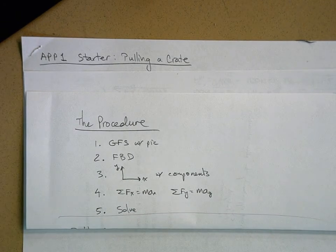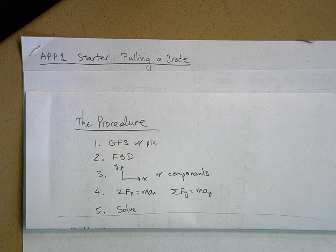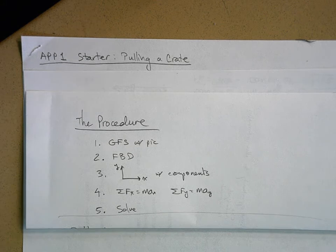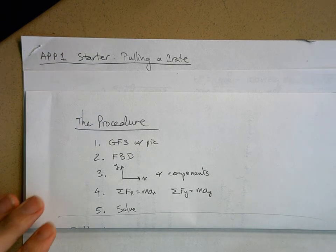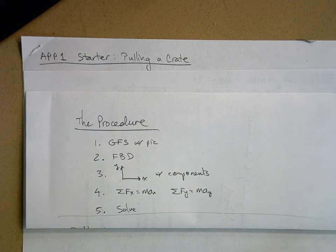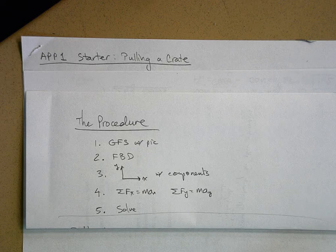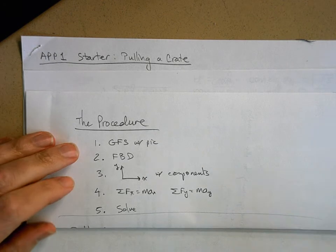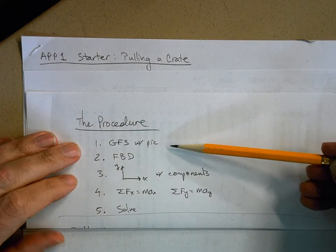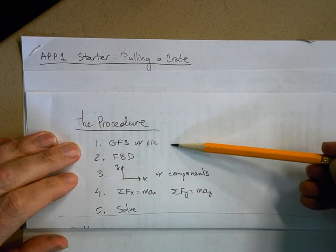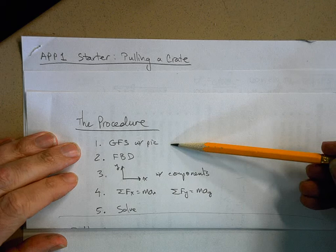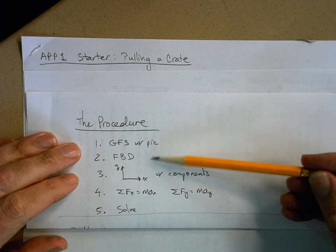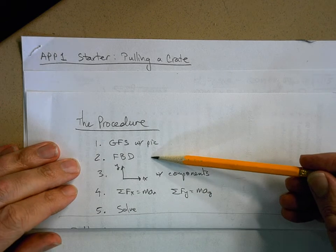Let's do this starter. It involves pulling a crate across the floor, but first I want to review the procedure that you're going to use to solve this problem. Give and find and solve with a picture. Draw the free body diagram.